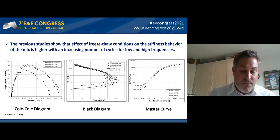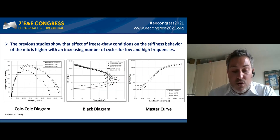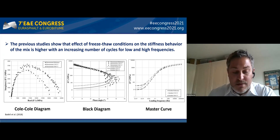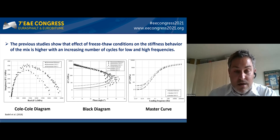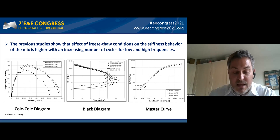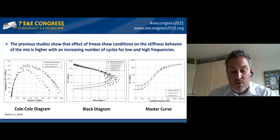Looking at the results: the Cole-Cole diagram on the left shows significant differences before and after 300 freeze-thaw cycles, while no significant differences appear between the reference and after 150 freeze-thaw cycles. The center figure shows the complex modulus results in the Black curve diagram — the phase angle reduces after reaching a maximum value. The difference of the maximum value before and after freeze-thaw cycles can be explained as stripping failure due to loss of cohesion. The master curve on the right shows that the top portion at high frequency/low temperature is equal for all conditions after 150 cycles.